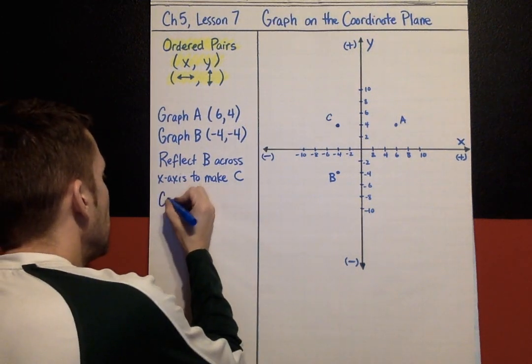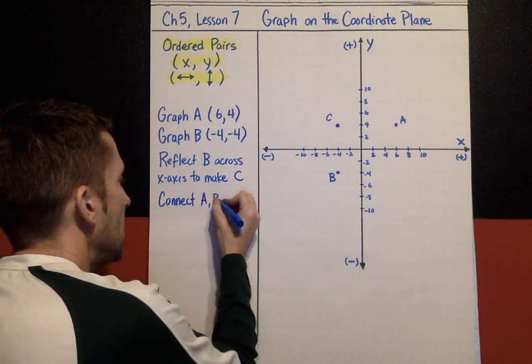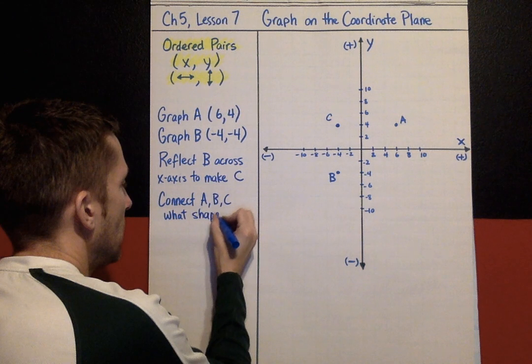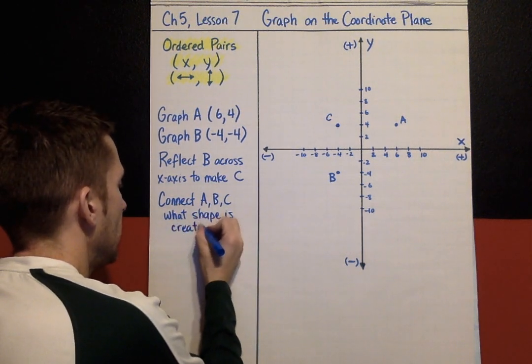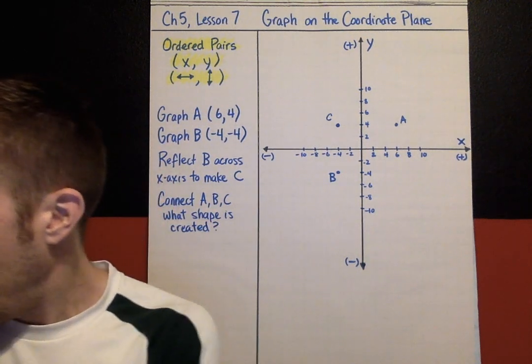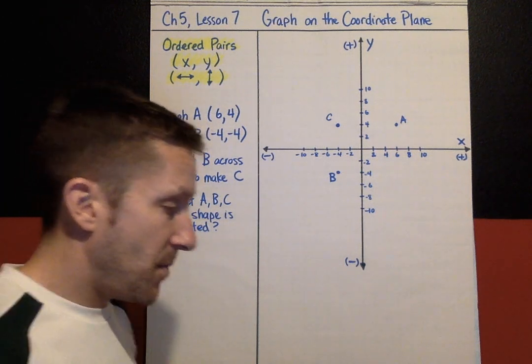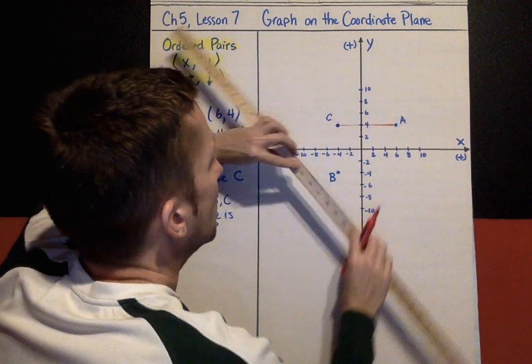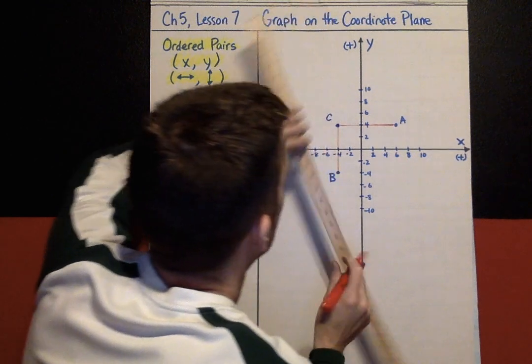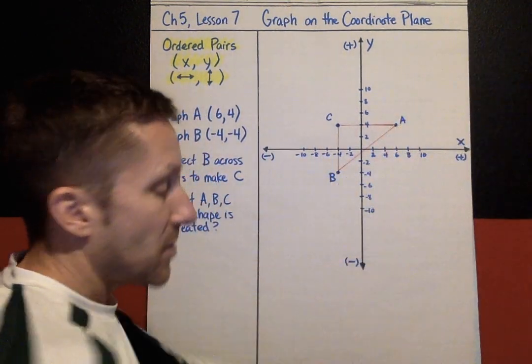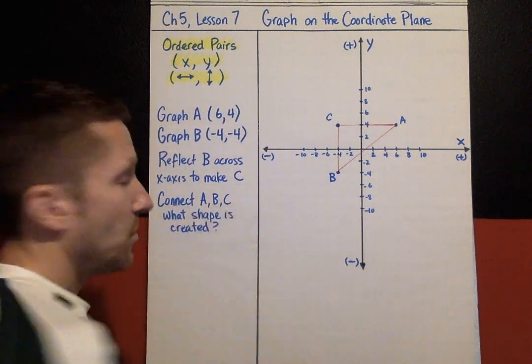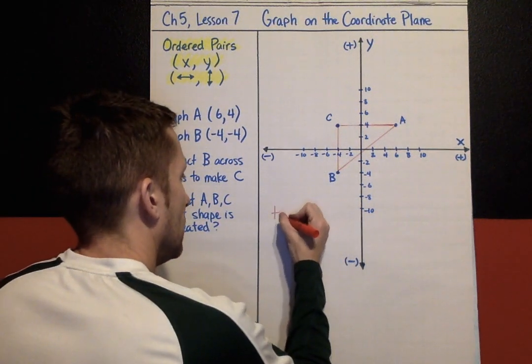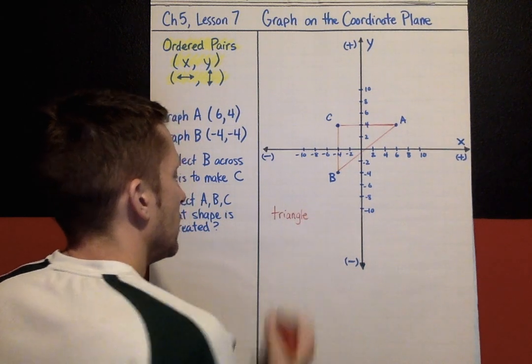The last thing we're going to do is connect A, B, and C, and see what shape is created. Well, if we connect our points correctly, if we graphed our ordered pairs correctly and then we connect them, we are going to have a triangle. There is our shape. So the answer, if you plotted the ordered pairs correctly, following these directions, and then we connect them, the answer is you would have a triangle.